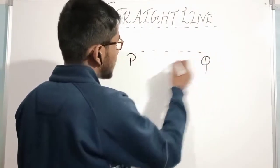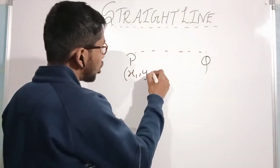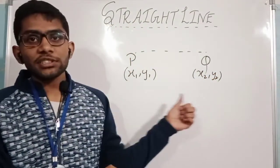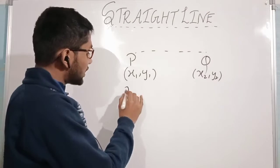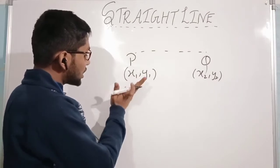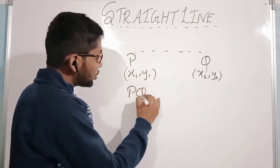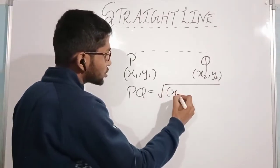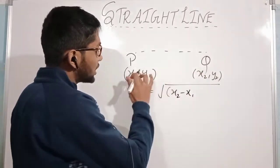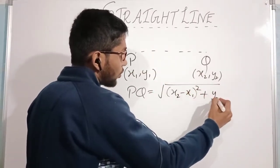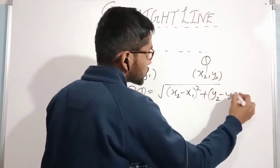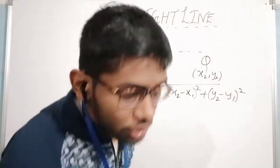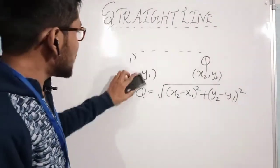यदि P के coordinate हैं x1, y1 और Q के coordinate हैं x2, y2, then what is the distance between them? Many of you will remember that the distance PQ is equal to under root of (x2 minus x1) whole square plus (y2 minus y1) whole square. This is the distance between two points P and Q, which you have studied in class 10th.